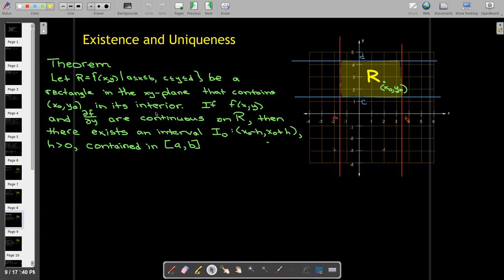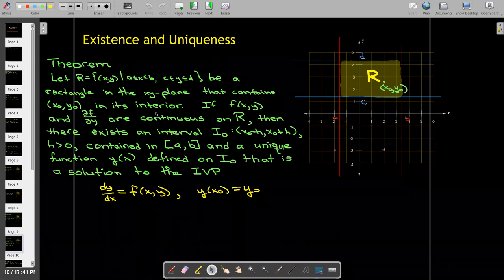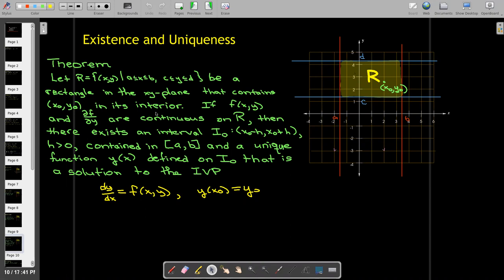And if that is the case, then we can find an interval surrounding x₀, and that interval must be contained within a to b, so contained within the rectangle. And there will be a unique function y(x) which is defined on that interval that will be a solution to the initial value problem.